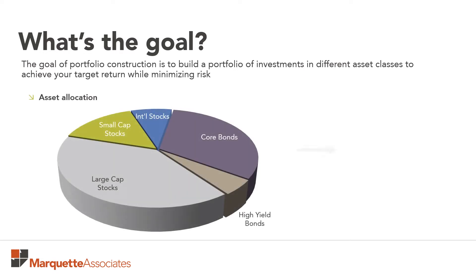In this particular example, the asset allocation shown here has an expected target rate of return of 6%, meaning that the portfolio should grow on average by 6% each year.